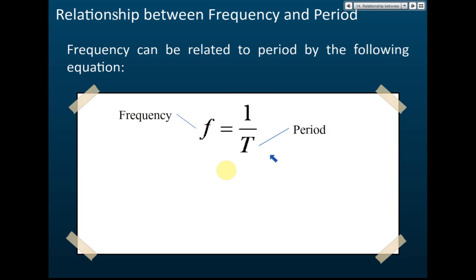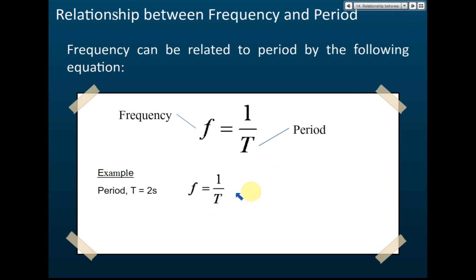For example, if an oscillating system has a period of 2 seconds, meaning it takes 2 seconds to make one complete oscillation, then using f equals 1 over T, substituting T equals 2 seconds, we get f equals 0.5 hertz. Usually it's easier to measure the time for one complete oscillation and then use the period to find the frequency.